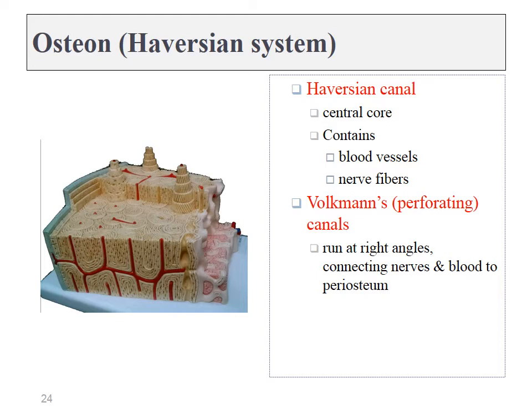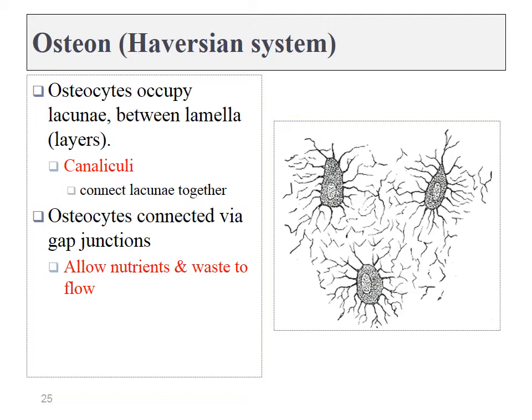The Haversian canal runs up the center of the osteon, while the perforating canals run side to side. In between each of the layers live a number of osteocytes — cells that made the layer as osteoblasts but differentiated into osteocytes once surrounded by bone tissue. Tiny canals called canaliculi remain within the bone tissue, connecting one cell to the next. This is important because blood containing nutrients is at the center, and nutrients must diffuse through the bone tissue.